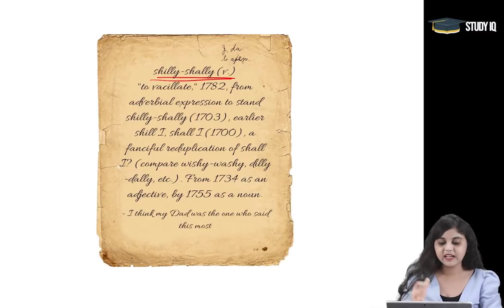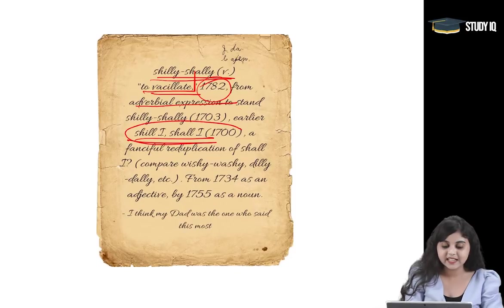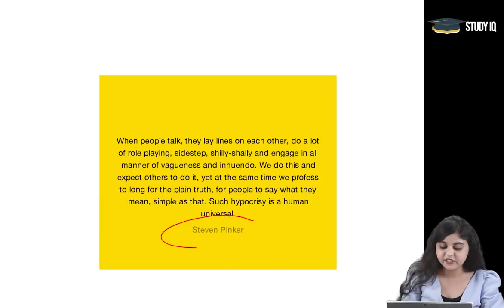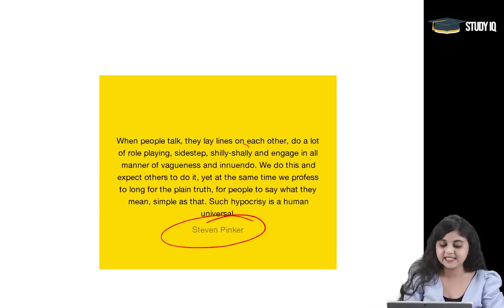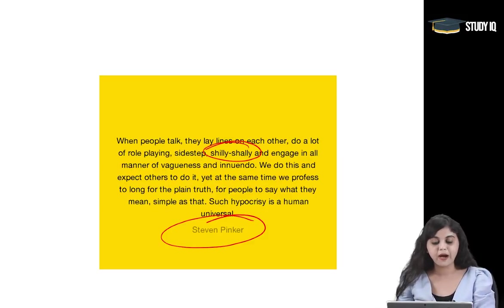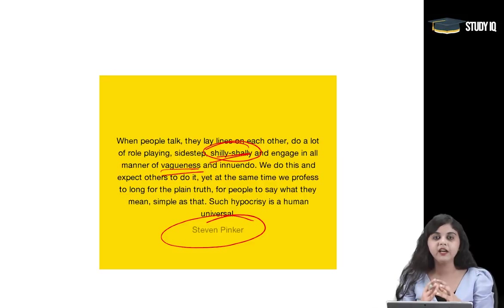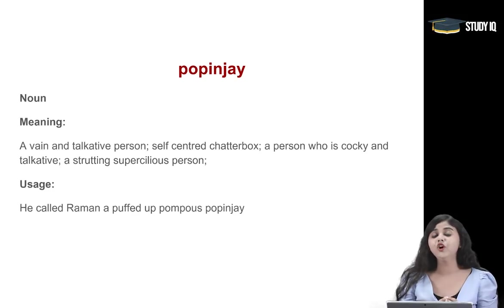This is a famous early penning of the word shillishalli meaning 'to vacillate,' written in 1782. This adverbial expression, which earlier was said as 'shillai shallai,' was a reduplication of the word when you are trying to vacillate. A famous quotation by Stephen Pinker: 'When people talk, they lay lines on each other, do a lot of role playing, sidestep and shillishalli to engage in all manner of vagueness.' So vagueness is one manner of shillishalli — when you are absolutely vague and not figuring out the correct decision you want to take.